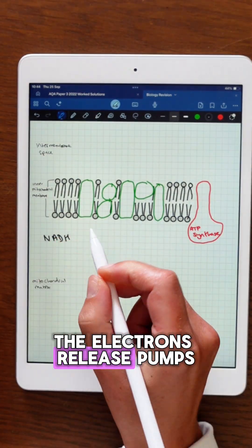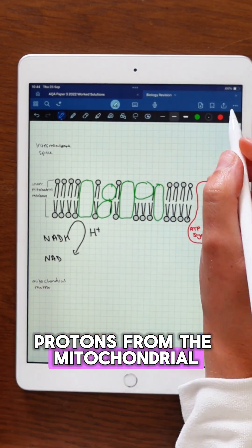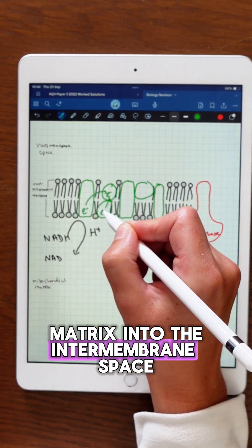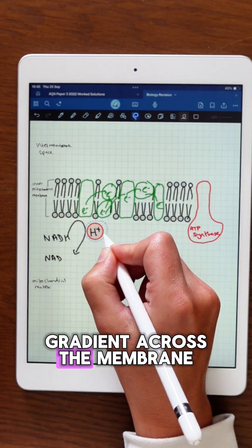The small amount of energy the electrons release pumps protons from the mitochondrial matrix into the intermembrane space. This creates an electrochemical gradient across the membrane.